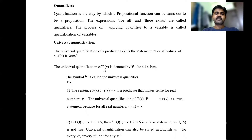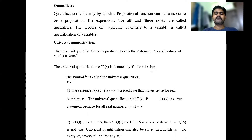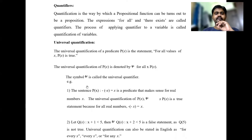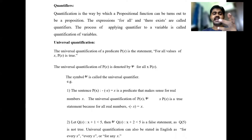The universal quantification of p(x) is denoted 'for all x, p(x)'. So for every value of x we can assert p(x) — for all 1: p(1), for all 2: p(2), and so on. The symbol 'for all' — the inverted A — is called the universal quantifier.